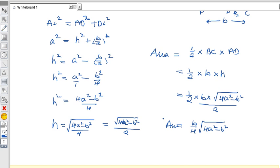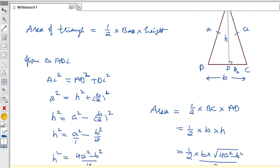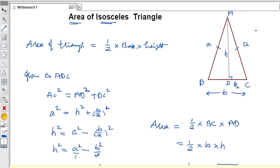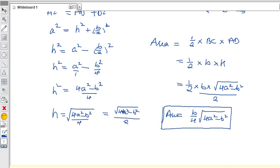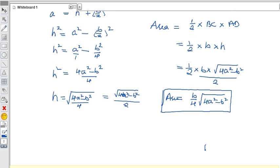Here, 'a' is the equal sides and 'b' is the different side. So (b/4)√(4a² - b²) is the formula to get the area of any isosceles triangle directly. This is the formula. Thanks for watching this video.